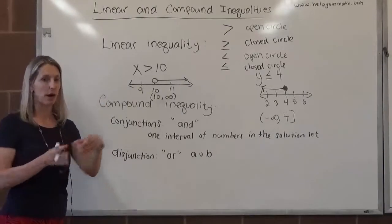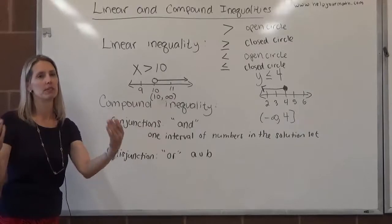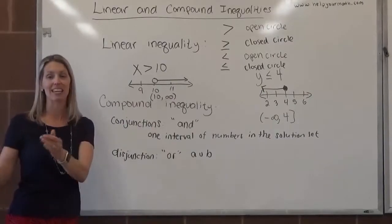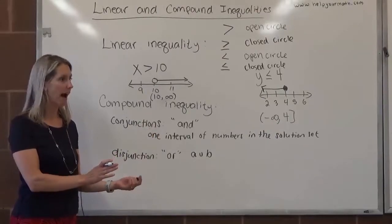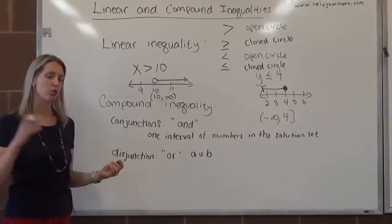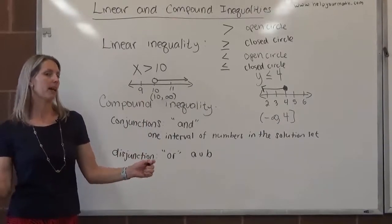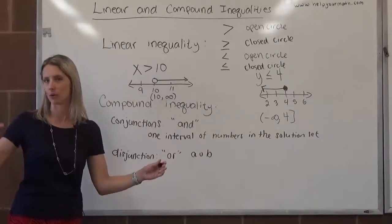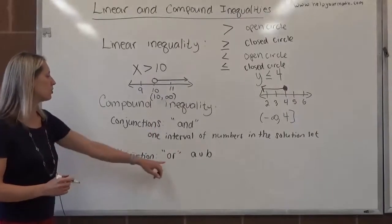A disjunction, you either meet this requirement or you meet this requirement. Generally, you don't meet both. It's like if there's special pricing for kids under 12 or adults older than 65, that would be a disjunction. You get a discount if you're one of those two things. But I've never met anyone who's both a kid under 12 and over 65.